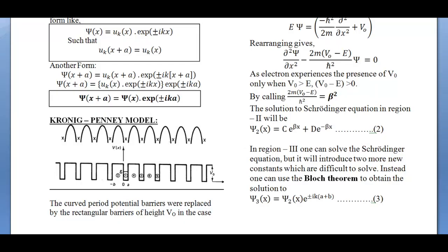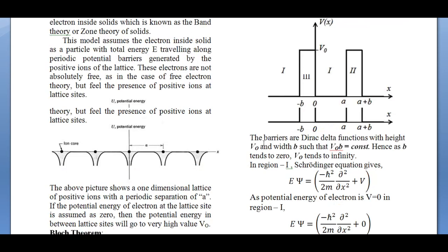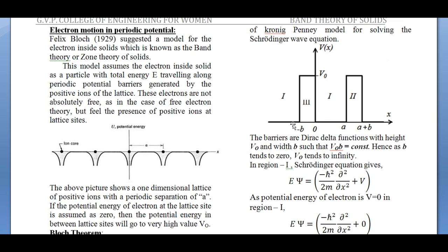As we have already depicted, the height of the barrier is V₀. Let us zoom into only three regions — region 1, 2, and 3. To obtain the solution for the Schrödinger wave equation, we first apply it to a particle of mass m inside region 1. While solving this, we must keep one important thing in mind.